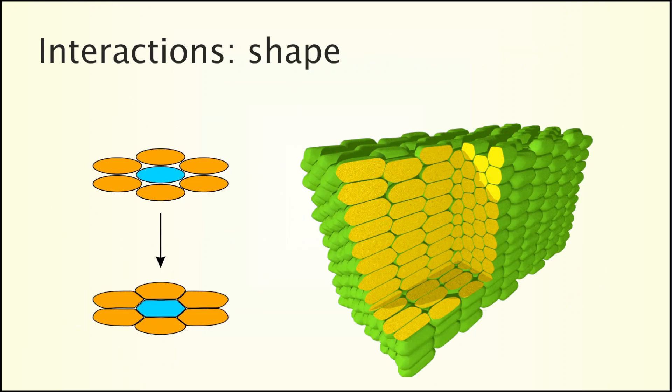Interactions between elements may affect other properties than position and orientation. In this case elements are affecting each other's shape.